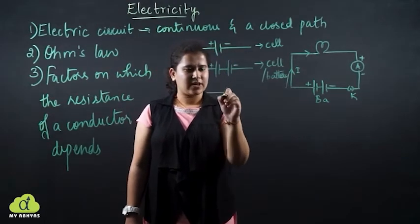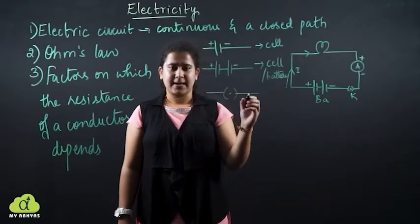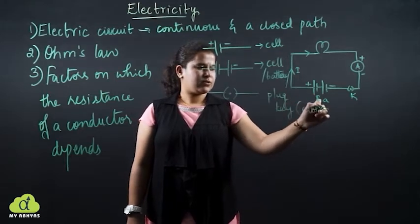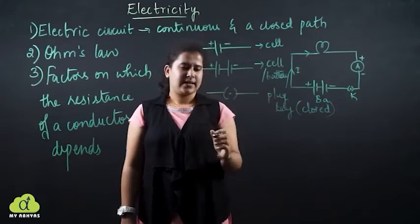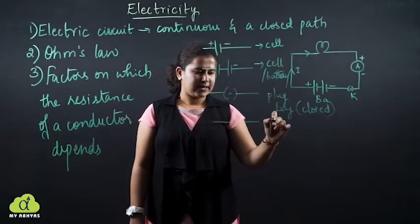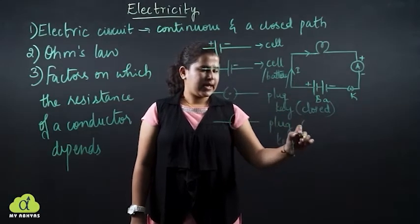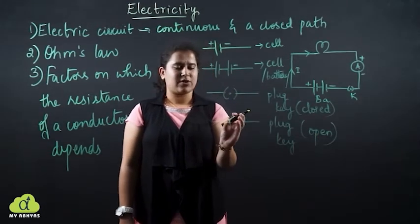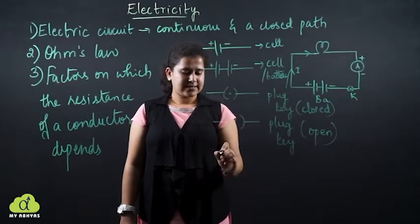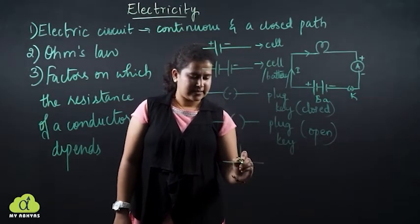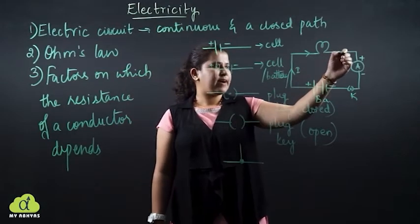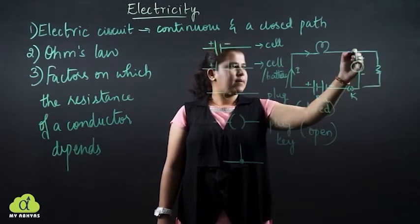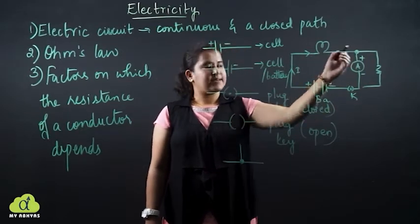After this, we have a closed plug key. Whenever it is closed, the current is passing. Next, we have an open plug key — it will be open and there won't be transfer of current from one end to another because there is nothing in between. After this, we have a wire joint, denoted like this when there is a wire joint in the circuit. If I have to connect another resistor, the wires are joined together and that is how it is denoted. Clear.